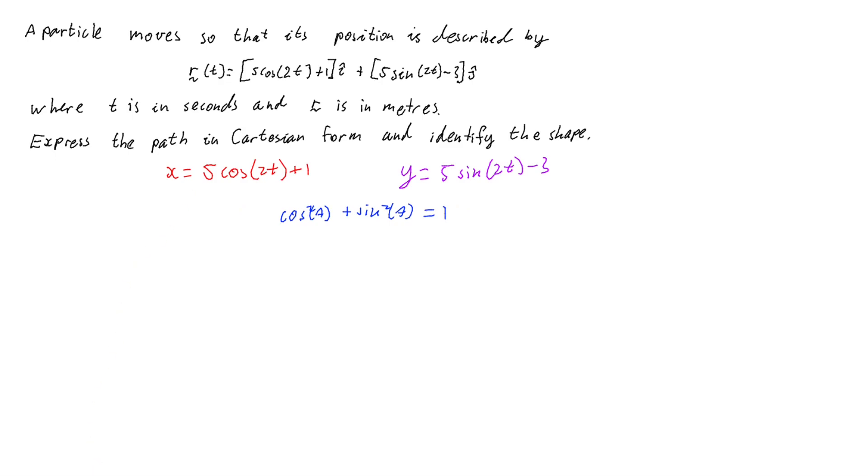So if I start off with my x equation, I can subtract 1 from both sides, giving me 5 cos of 2t, and then divide both sides by 5, giving me just cos of 2t. But I need cos squared. So we'll then go and square both sides, giving me x minus 1 on 5 squared equals cos squared of 2t.